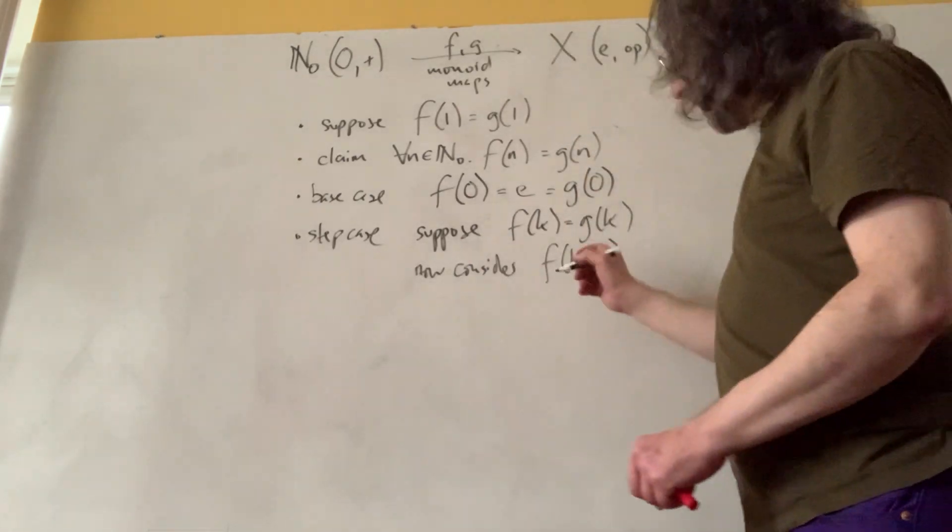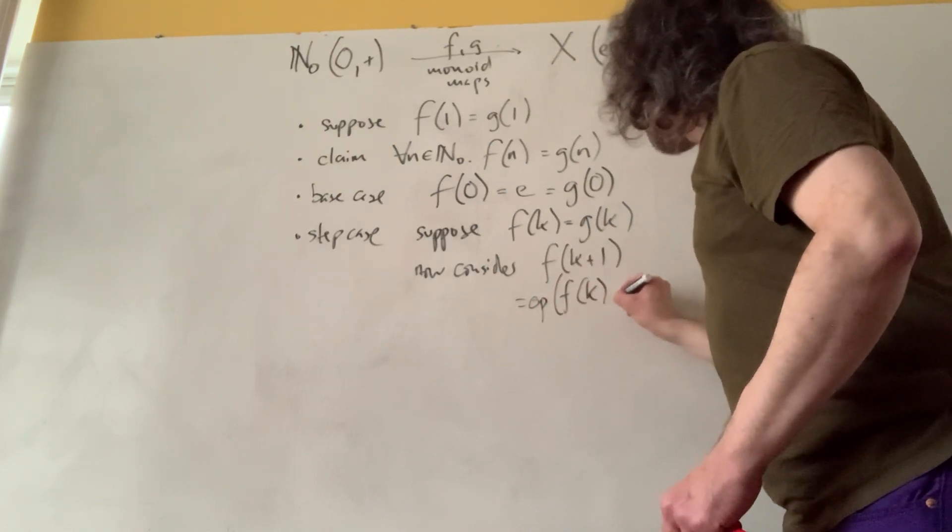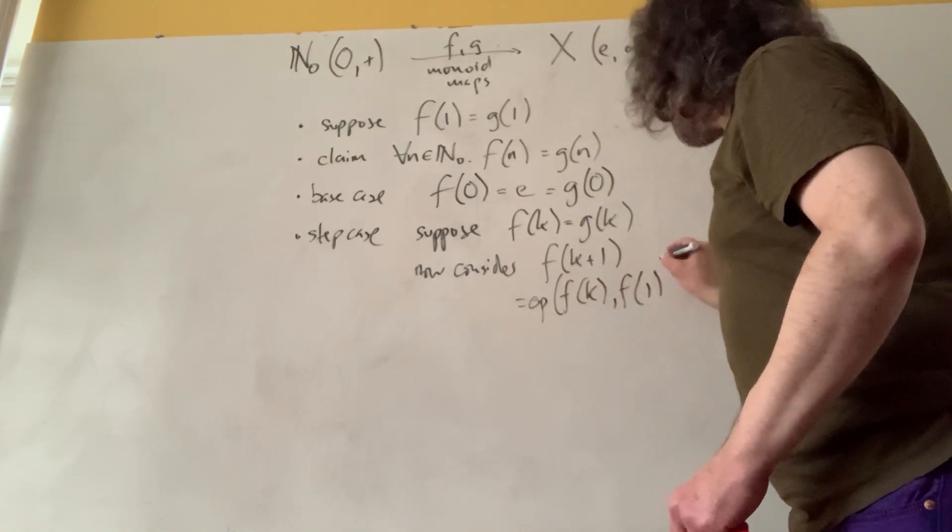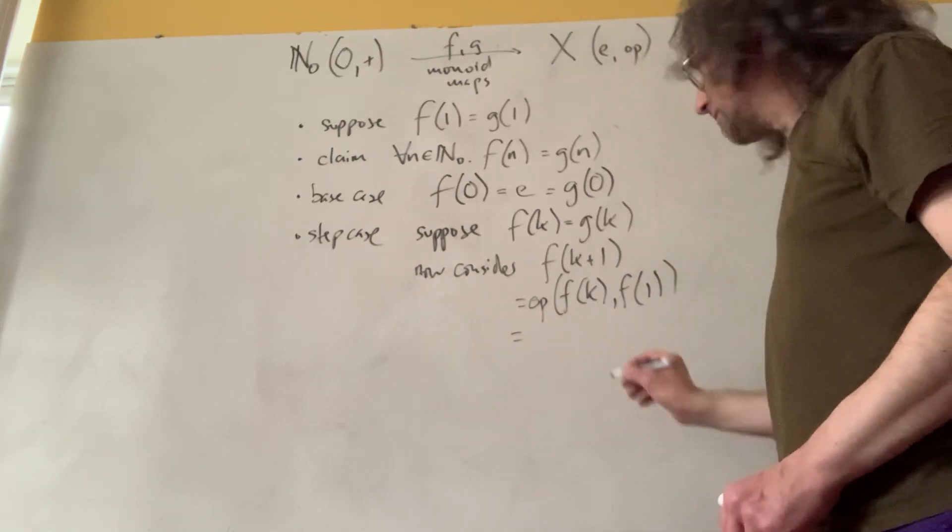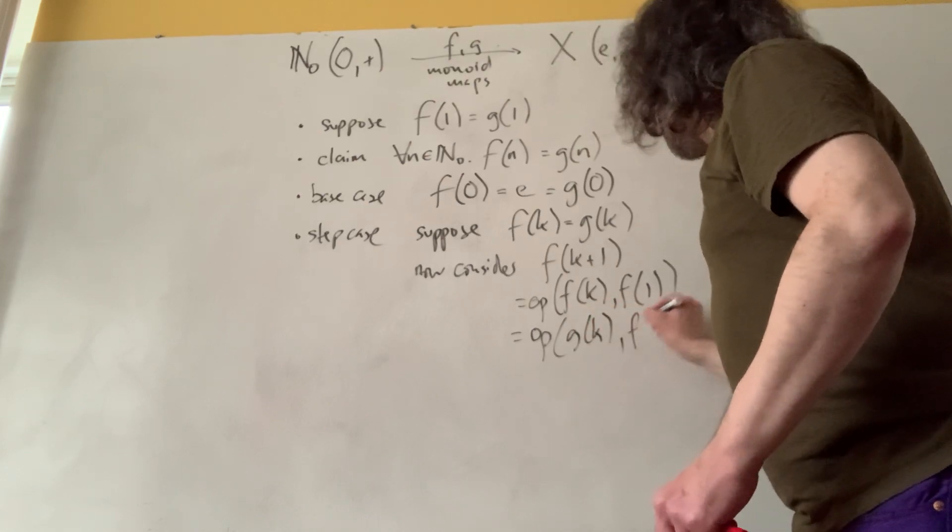Because f is a monoid map, that has to be op of f of k, f of 1. But by induction hypothesis, that's op of g of k and f of 1.